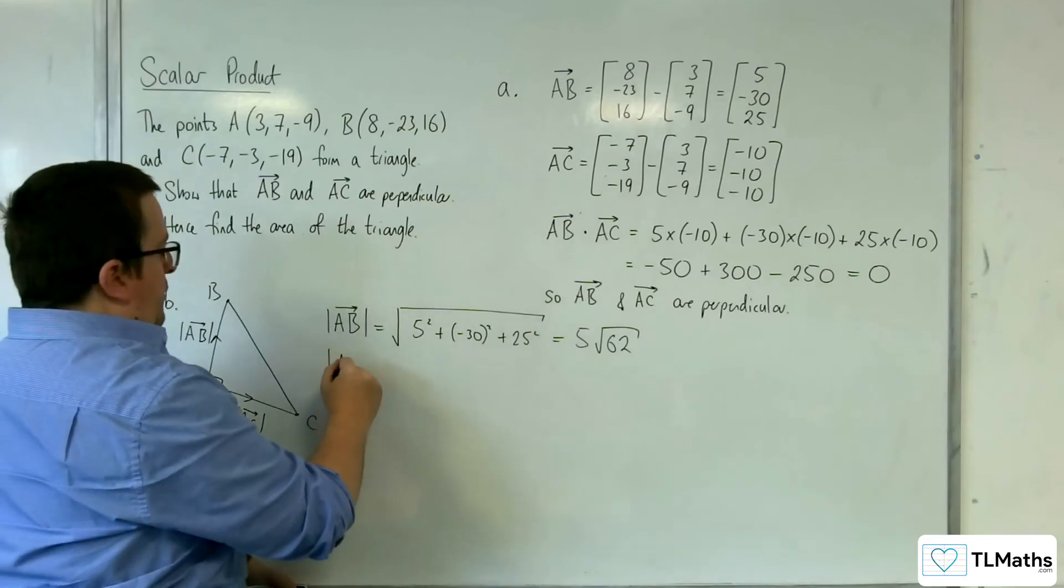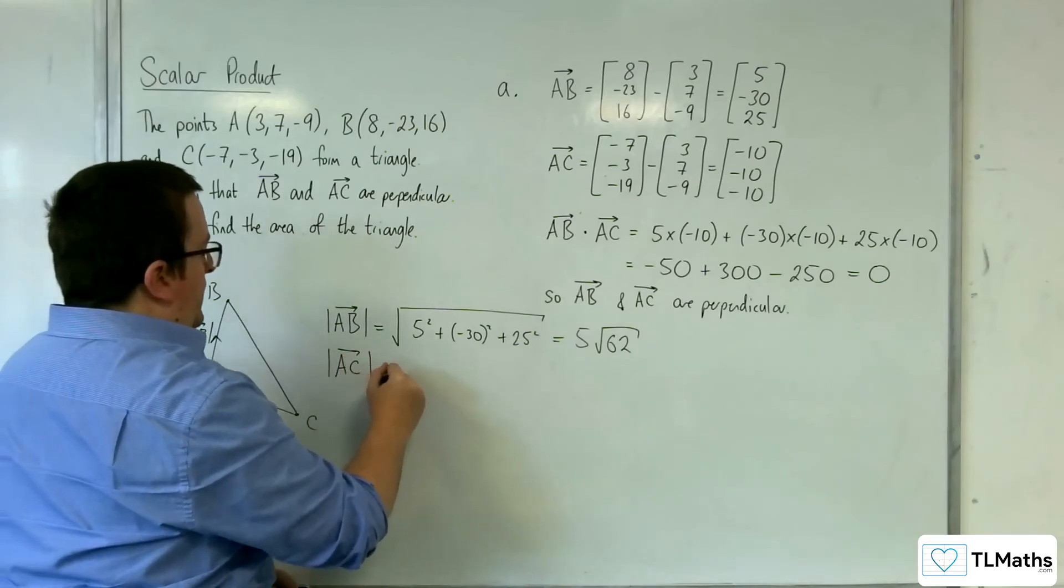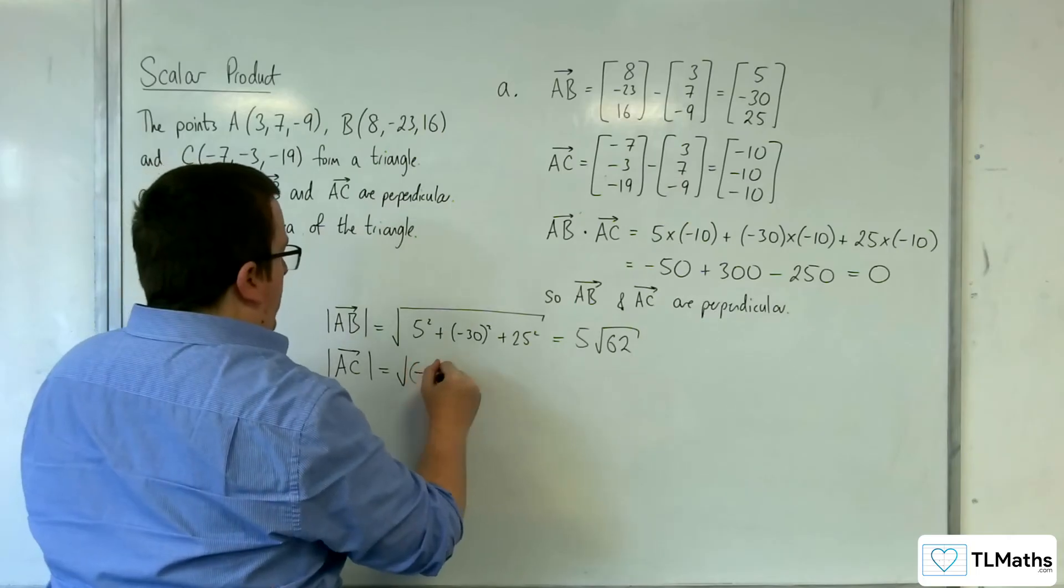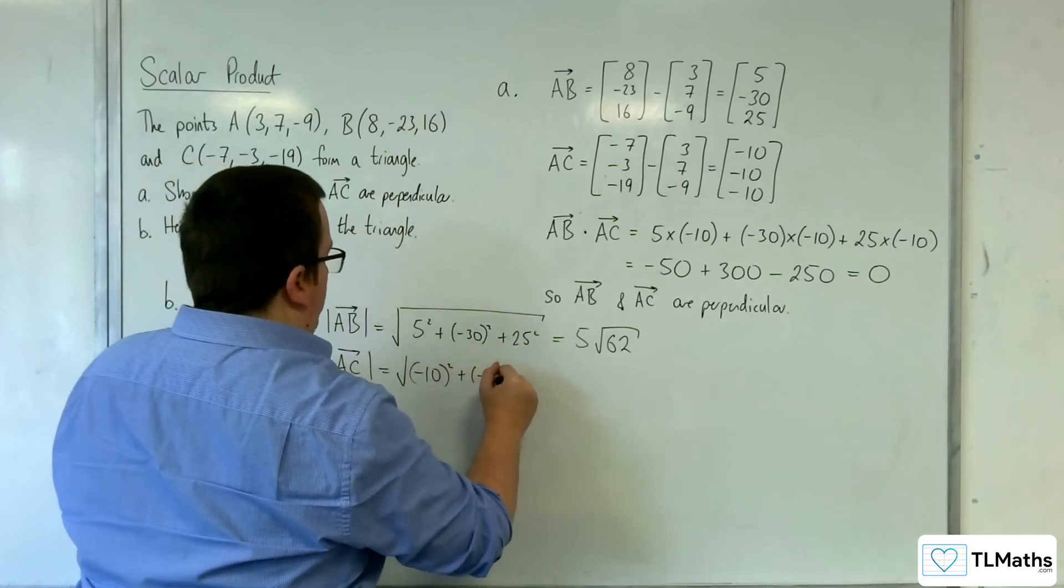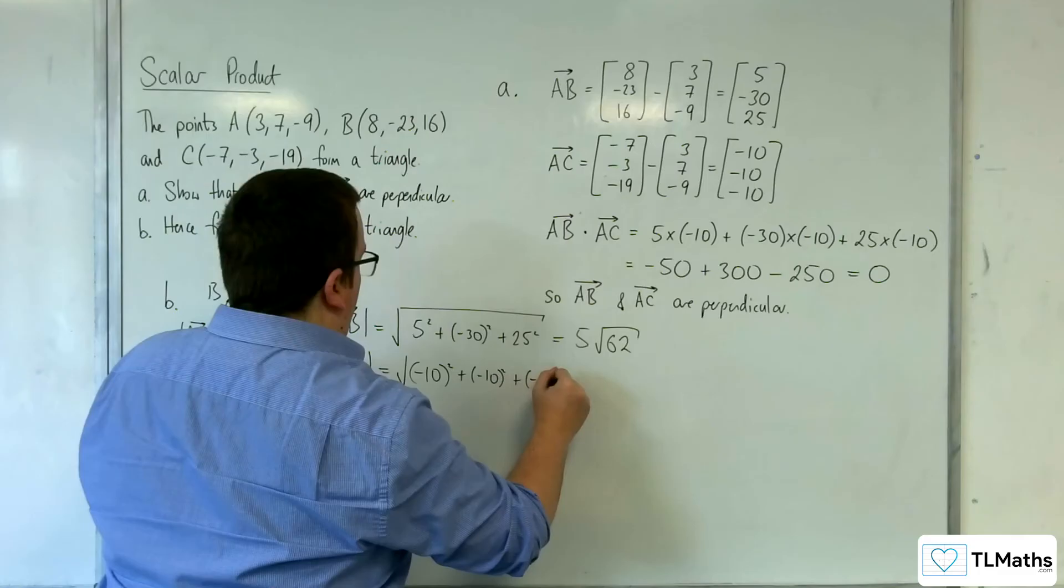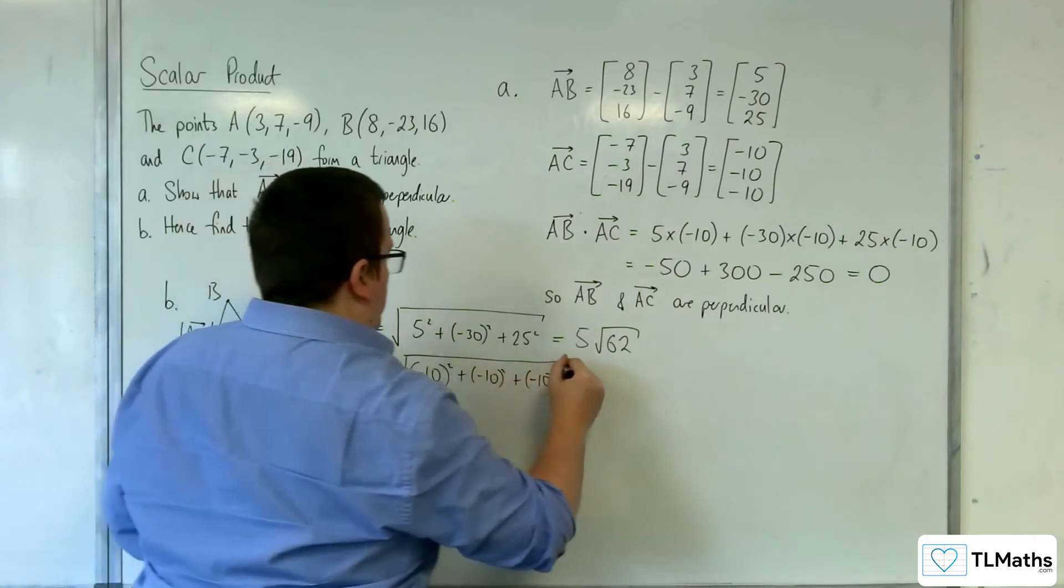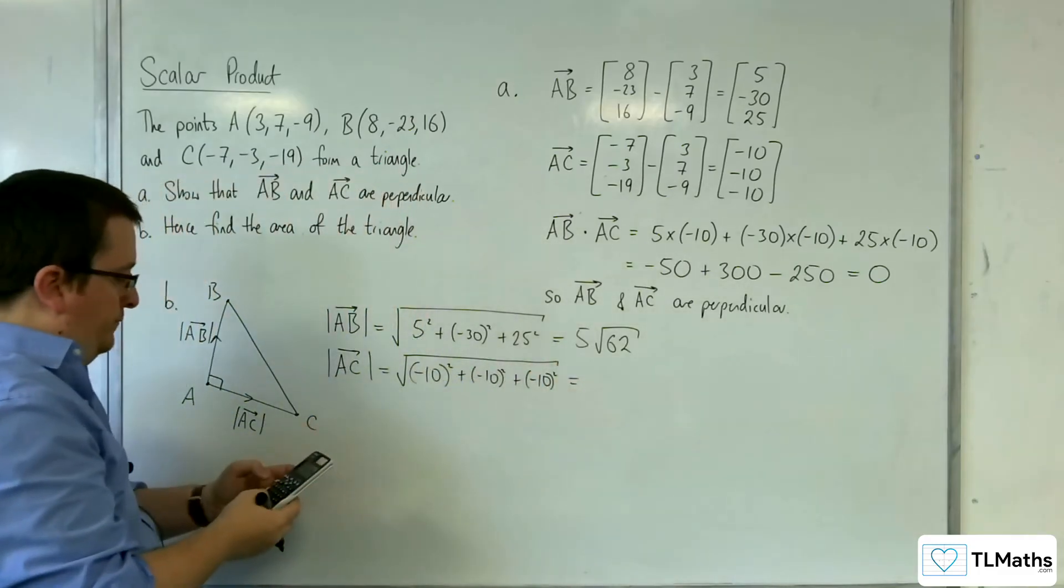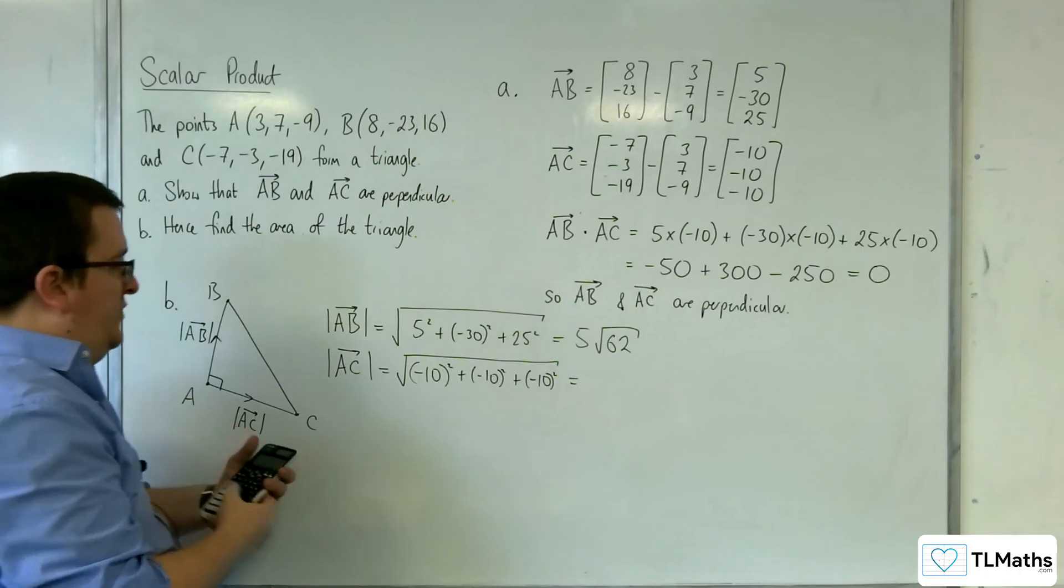And the length of AC is going to be the square root of minus 10 squared plus minus 10 squared plus minus 10 squared. So that's the square root of 300, which is 10 root 3.